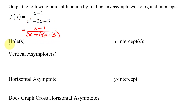Does this function have any holes? Holes come from when we reduce factors containing x between the numerator and the denominator. I couldn't do that in this case, so are there any holes? No, there are none.